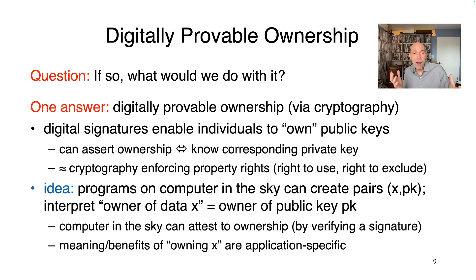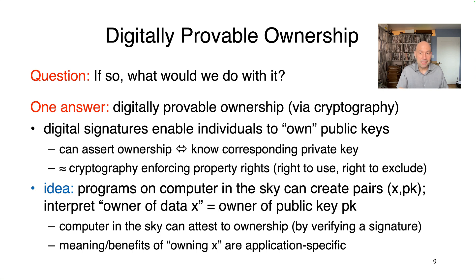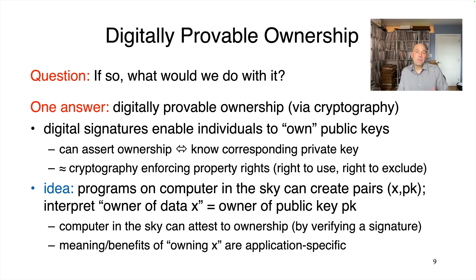Suppose now we actually had our computer in the sky, capable of doing general purpose computations and certainly capable of verifying digital signatures. We can extend this notion of ownership from just public keys to arbitrary data stored on that computer in the sky. The idea, conceptually, is super simple: allow programs running on this computer — maybe the operating system, maybe user-installed programs — to create pairs consisting of data x and a corresponding public key. The owner of x is just defined as the owner of the public key. In other words, the owner of data x is someone who knows the private key corresponding to the associated public key PK. This computer in the sky is perfectly positioned to verify and attest to ownership of data residing on it, simply by verifying a suitable digital signature.